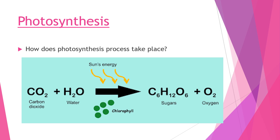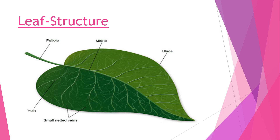Now let us learn about the structure of the leaf. Leaves of different plants can be different - long like banana leaves, huge like teak leaves, or small like rose or shisham leaves. But a few parts of the leaf are common. The first part is called the petiole or the stalk. The second part is called the main vein or the midrib. The third part is called the leaf blade or the lamina. The fourth part is called the side veins, which are further divided into small nested veins.